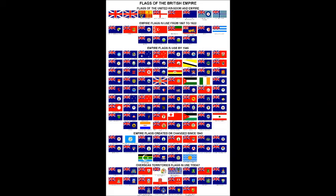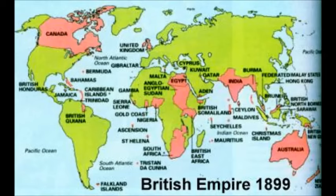Colonies that had mostly British immigrants, like Canada, Australia and New Zealand, were given a large degree of self-rule as early as the 1800s. Other colonies, like India and South Africa, had to fight long and hard to become independent.